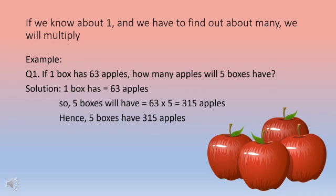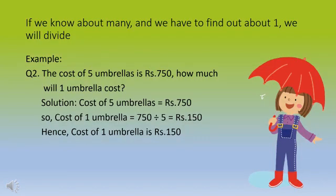Example 1: If one box has 63 apples, how many apples will 5 boxes have? Solution: 1 box has 63 apples, so 5 boxes will have 63 multiplied by 5, which equals 315 apples. Hence, 5 boxes have 315 apples.